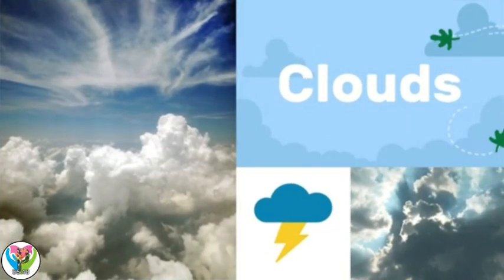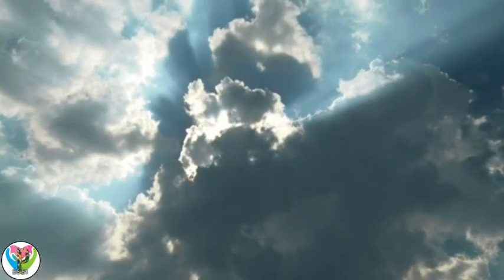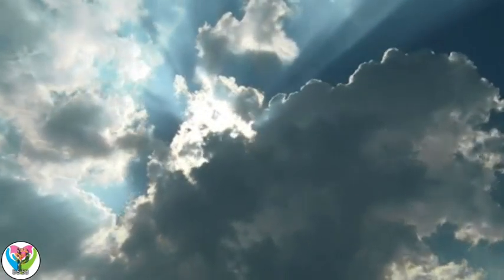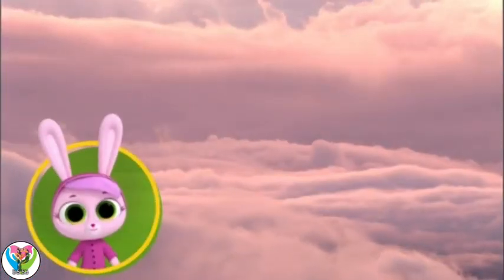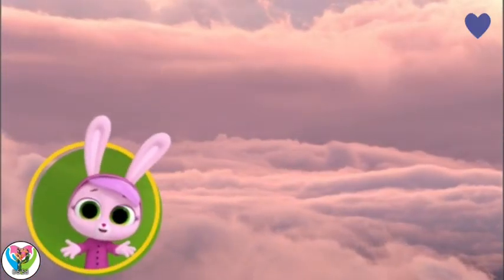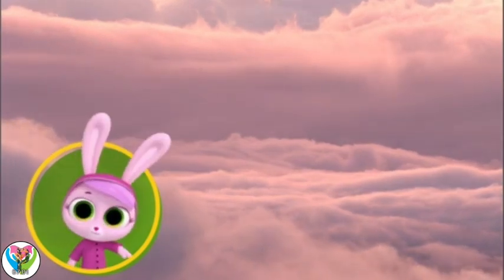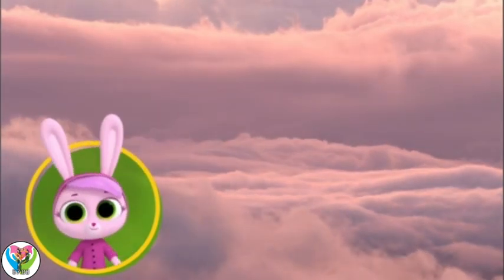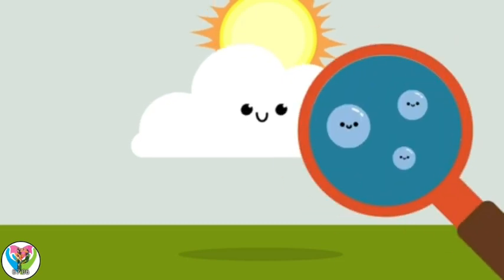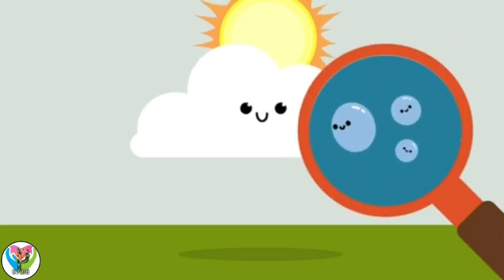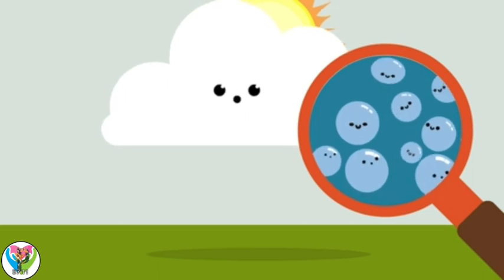Clouds. Clouds come in all shapes and sizes. Willow, do you know what clouds are made of? I do — marshmallows! Only joking. They're made of water. A cloud is made up of very tiny droplets of water, or ice crystals. They're so light, they can float in the air.